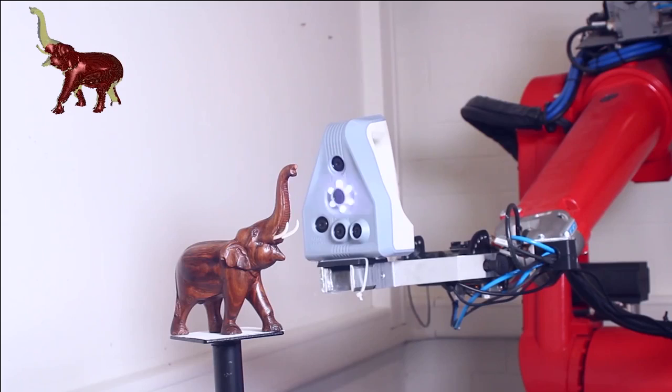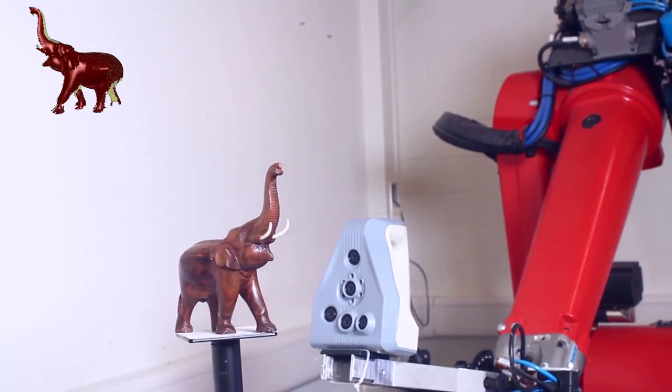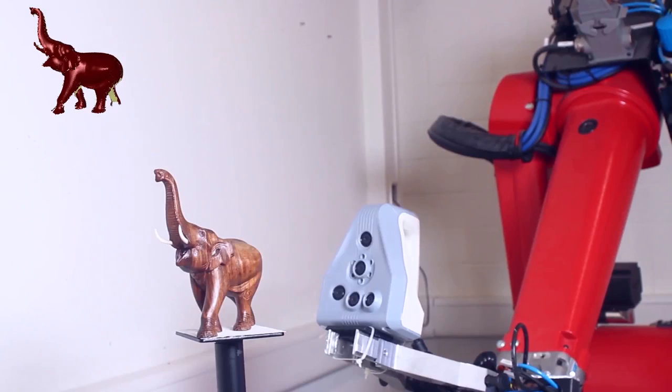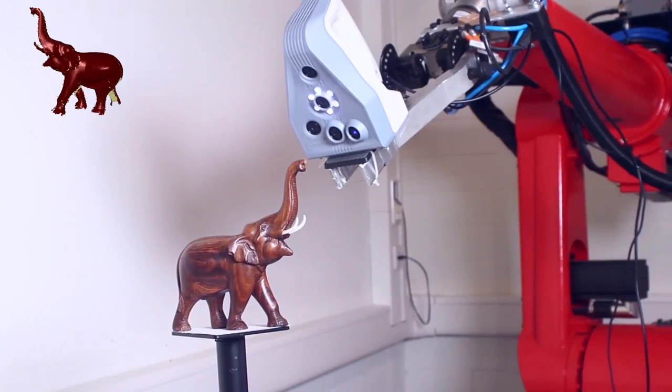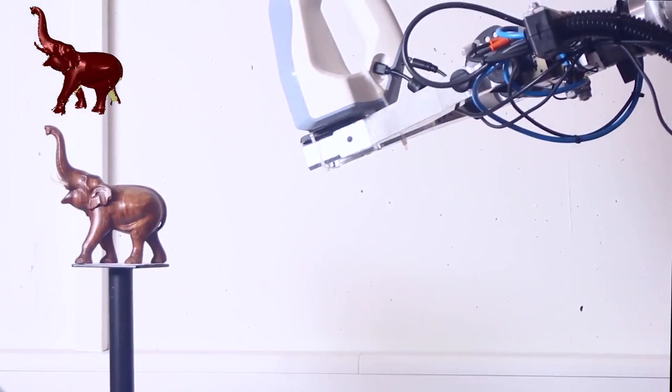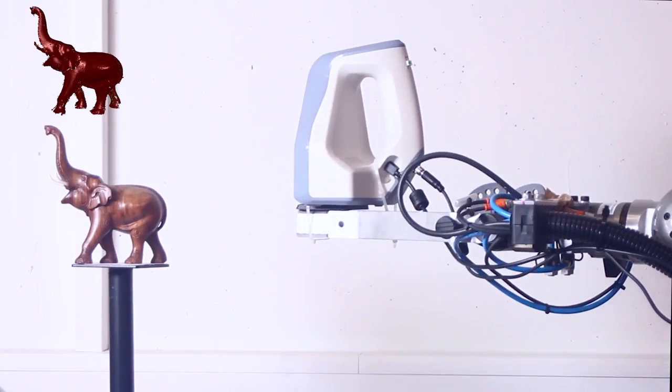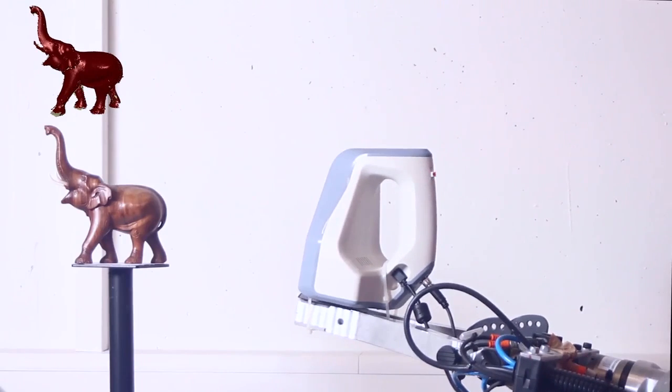We have also experimented with our algorithm on another robotic platform. This one-arm industry robot allows doing precise moves and so enables us to automatically scan a delicate elephant object at high quality and high fidelity.